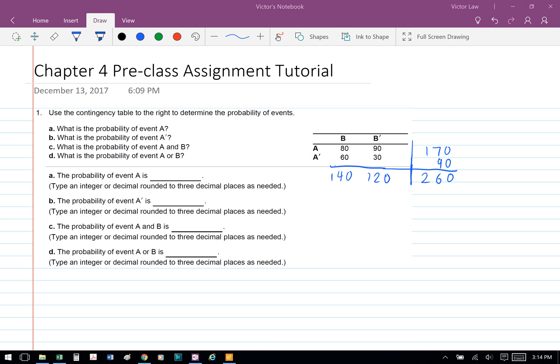We're going to get the row total for row A and A', which is 170 and 90. When we add it up, we have a total of 260.